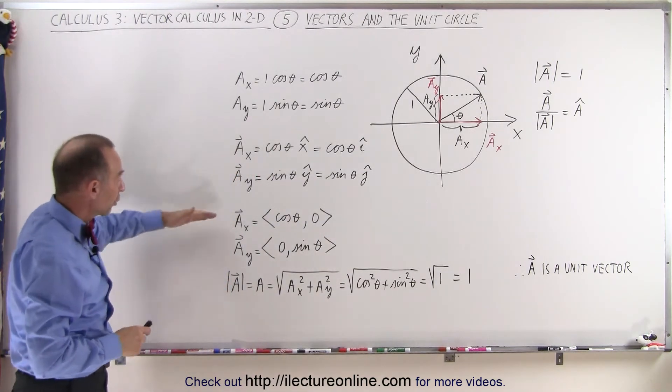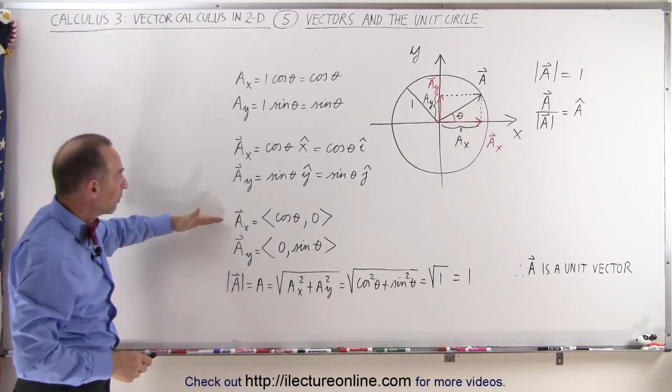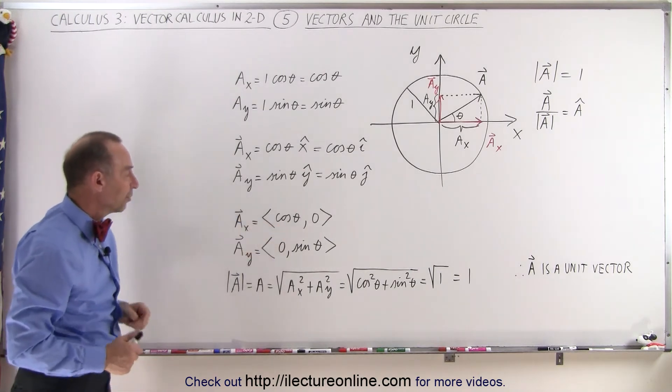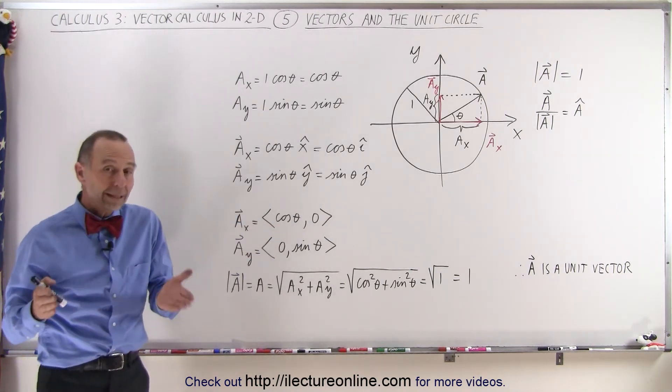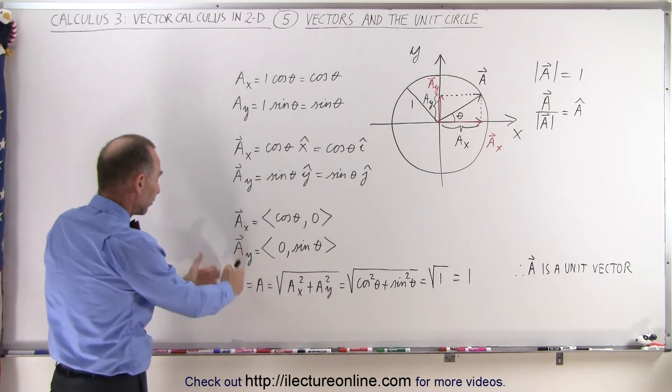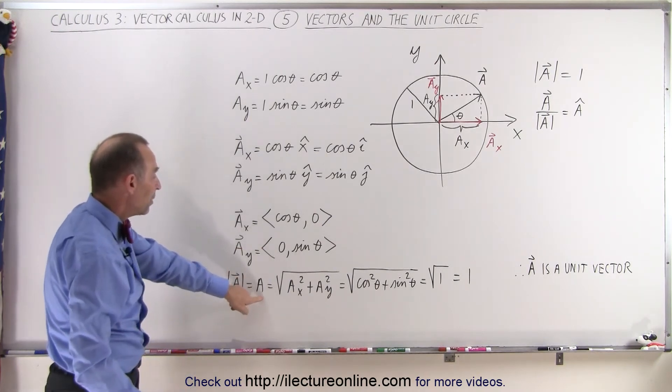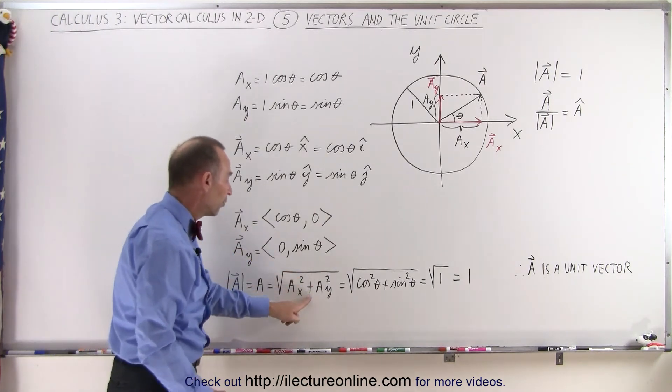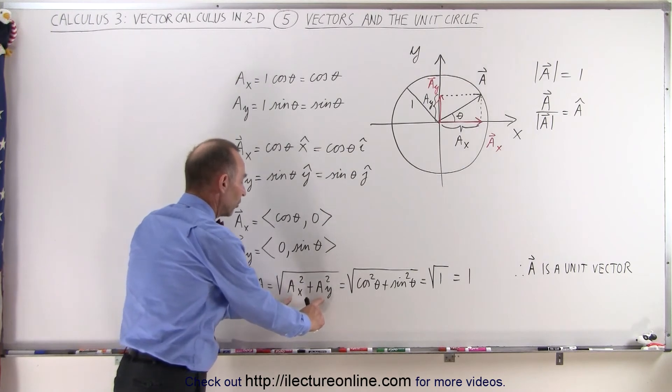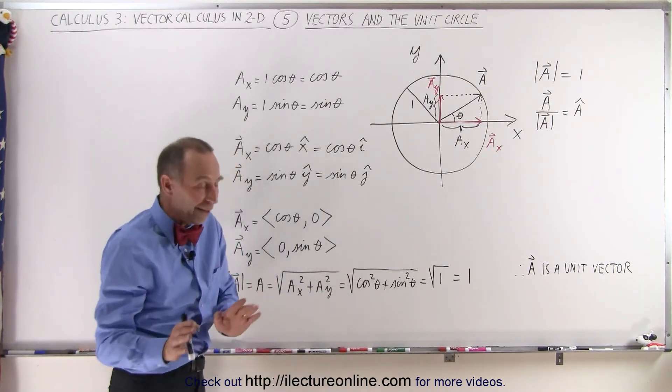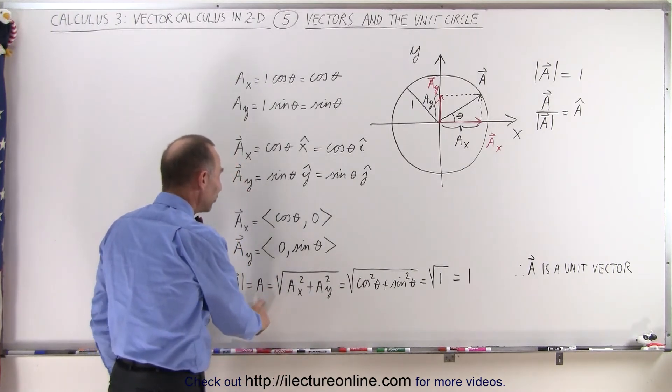Of course, as you now know, you can also represent the x and y components like this as well. And again, calculating the magnitude of vector a, that would be written as a, which is equal to the square root of the sum of the components of the vector squared.